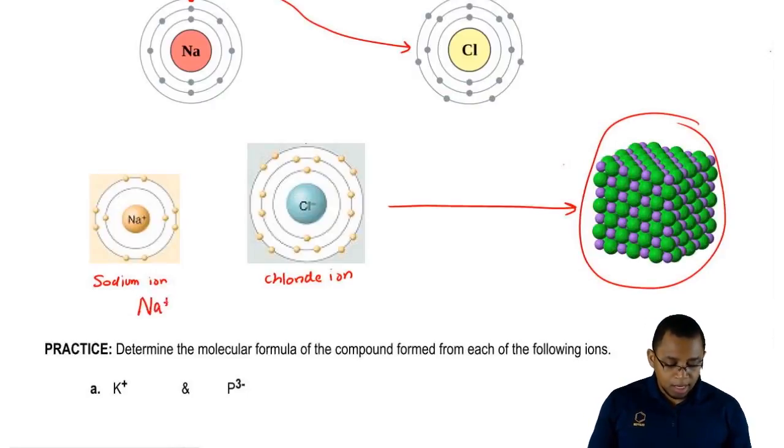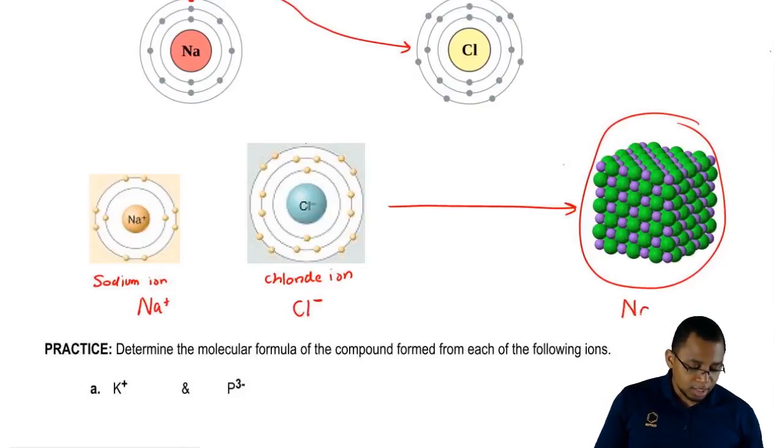We've seen this before. How do they combine to form our compound? Since they have opposite charges and they're the same number, they just combine together to give us sodium chloride.